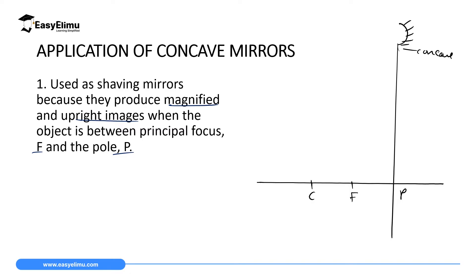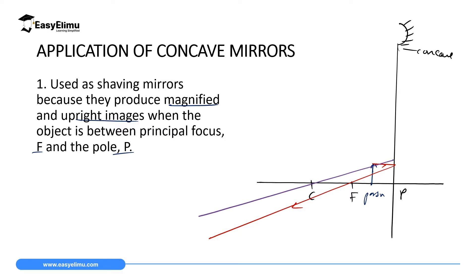At the focal point we have the principal focus F. For the person who is shaving, they will be seated between the pole and the principal focus. To locate the image of this object we can use any of the rays we discussed. A ray parallel to the principal axis will be reflected and pass through the principal focus. The second ray passes through C, and the tip of the object will be reflected along its own path.